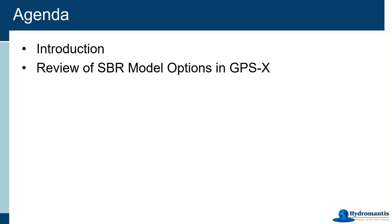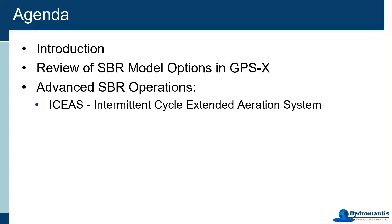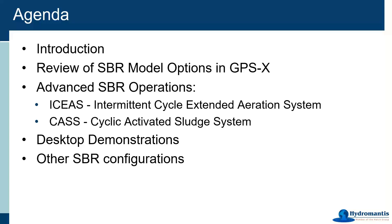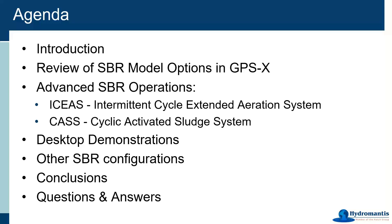The plan for today is to start by reviewing the SBR model options we have in GPSX, setting context for the two different systems: the ICAS system (intermittent cycle extended aeration system) and the CAST system (cyclic activated sludge system). These allow the SBR cycle to continue treatment while still receiving continuous influent flow. I'll then run desktop demonstrations, and at the very end touch on one more complex configuration before Q&A.